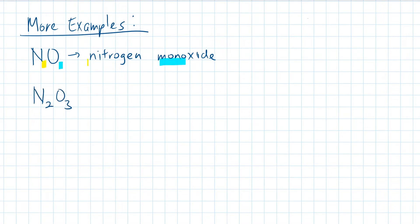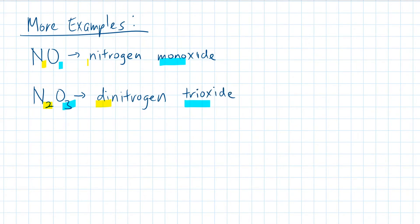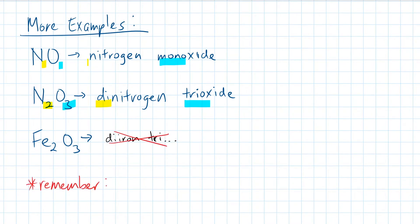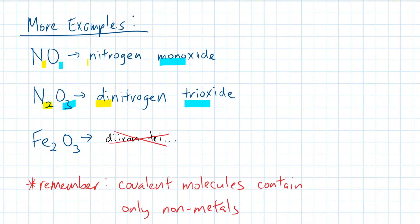Here's another one. This chemical formula describes a compound with two nitrogens and three oxygens, so the nomenclature for this molecule is dinitrogen trioxide. What about this example? I hope that you didn't accidentally write down this, as iron is classified as a metal. Also, since iron is multivalent, the proper nomenclature for this is iron 3 oxide.